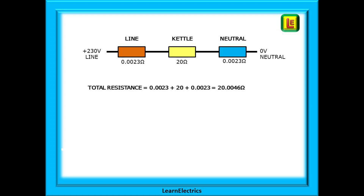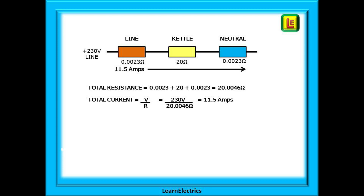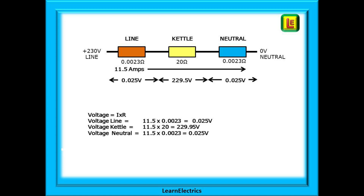The total resistance is all three added together: 20.0046 ohms, with 230 volts across them. Current equals voltage divided by resistance: 230 volts divided by 20.0046 ohms is approximately 11.5 amps. We round to avoid excessive decimal places. This 11.5 amps flows through the line conductor, through the kettle element, and through the neutral conductor. We can now calculate the individual voltage drop across each part: voltage is I times R, giving 0.025 volts across each of the line and neutral conductors.